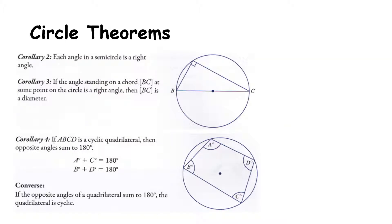This theorem also has three more corollaries. Corollary 2 is each angle in a semicircle is a right angle. Corollary 3 says if an angle standing on a chord BC at some point on the circle is a right angle, then BC is a diameter. If you actually look here, Corollary 2 and Corollary 3 are the converse of each other. One is saying that each angle in a semicircle is a right angle and Corollary 3 is basically saying if you have a right angle, then you must have the diameter.